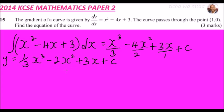We are told the curve passes through the point (1, 0), so we substitute y = 0 and x = 1 to find c. That gives us: 0 = (1/3)(1)³ - 2(1)² + 3(1) + c, which simplifies to 0 = 1/3 - 2 + 3 + c.